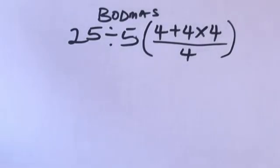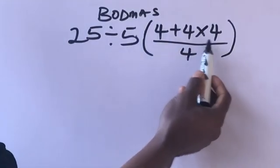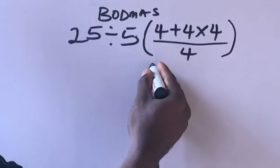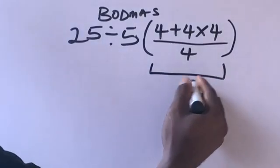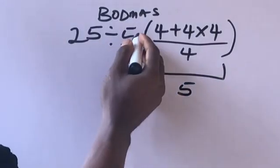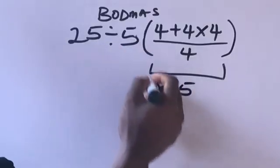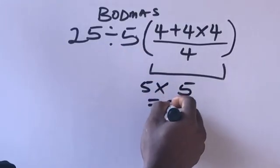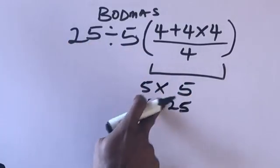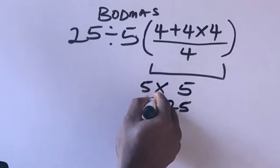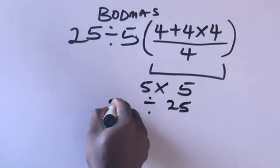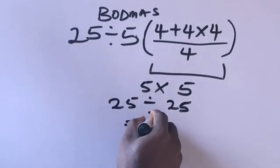Hi guys, welcome to my channel. Everything here will give us what? Five times five equals 25. Now 25 divided by this 25 is equal to one.